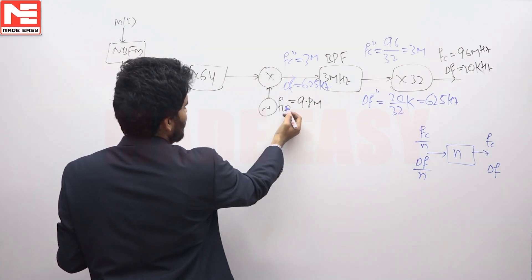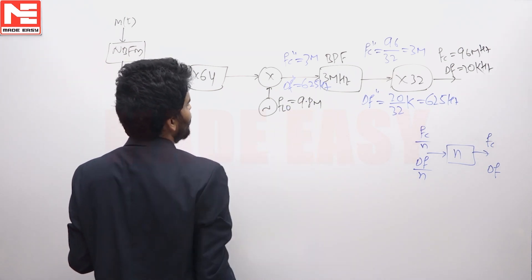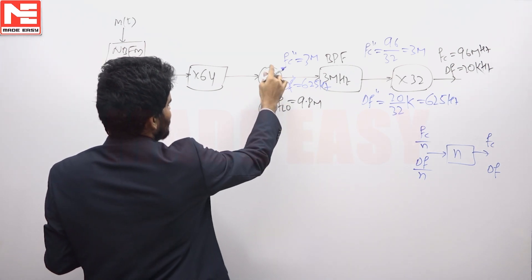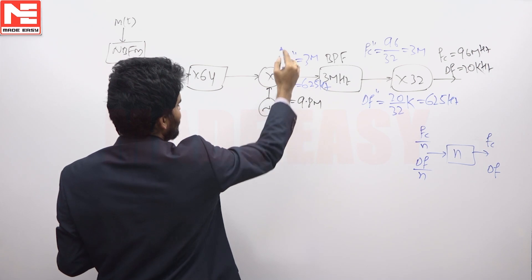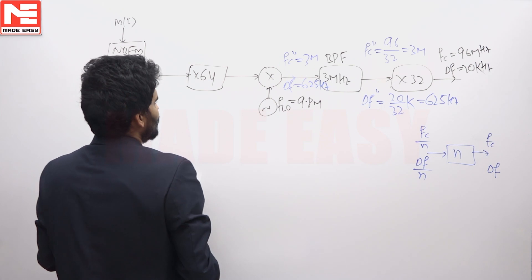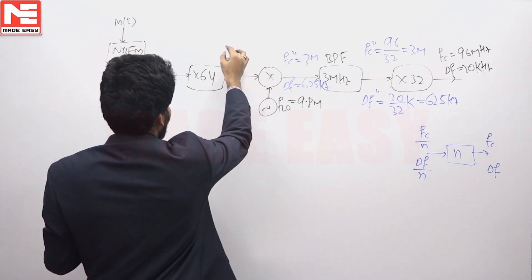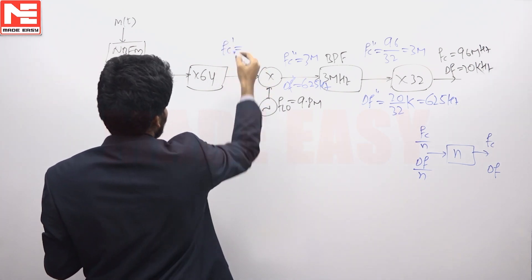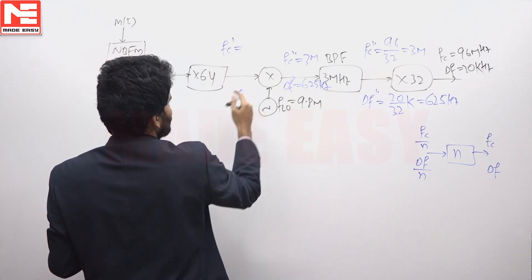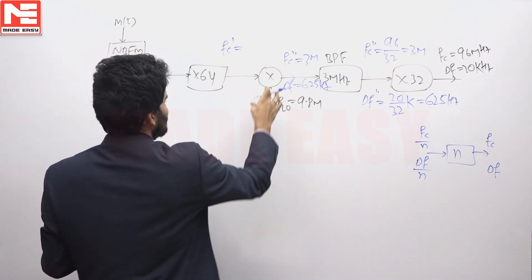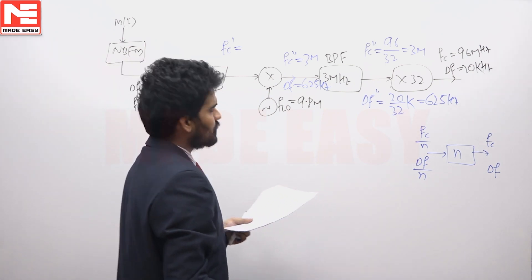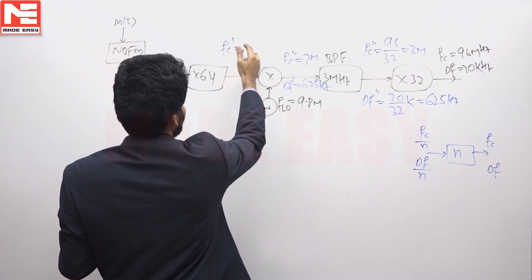Before the band pass filter, there is a multiplier with a local oscillator frequency of 9.8 MHz. This normal multiplier has an effect only on carrier frequency and no effect on frequency deviation. We need to determine what the carrier frequency is at the input of this multiplier.